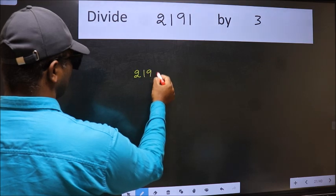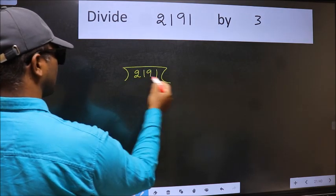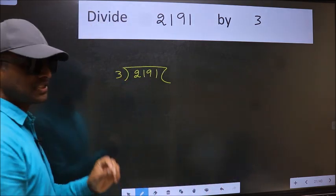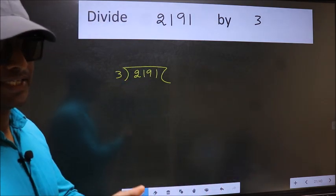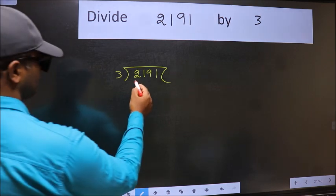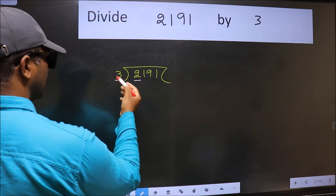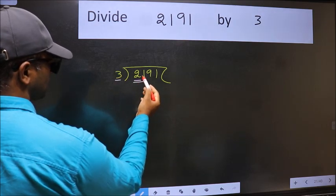2191 and 3 here. This is your step 1. Next, here we have 2 and here 3. 2 is smaller than 3, so take 2 numbers: 21.